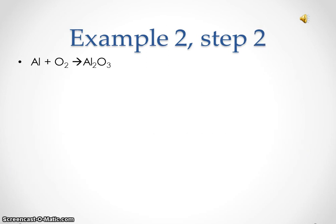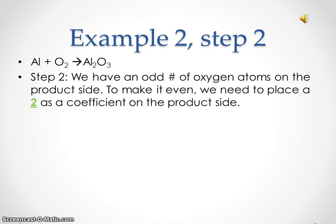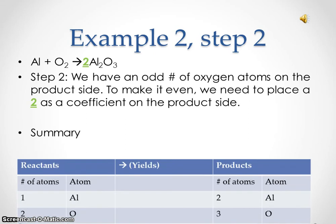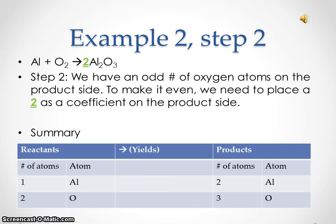Example two, step two. We had aluminum plus oxygen yielding aluminum three oxide. We have an odd number of oxygen atoms on the product side. To make it even, we need to place a two as a coefficient on the product side. After we do that, on the reactant side we have one aluminum atom and two oxygen atoms. On the product side, we now have four aluminum atoms and six oxygen atoms.